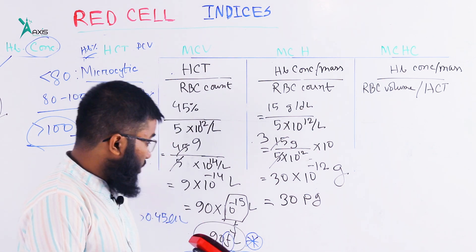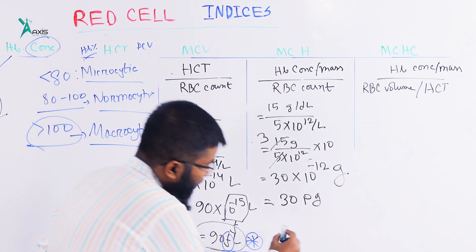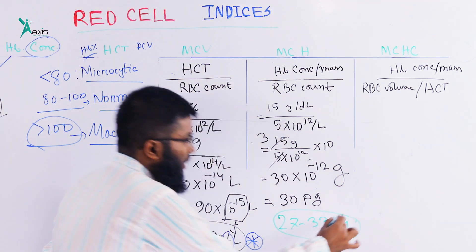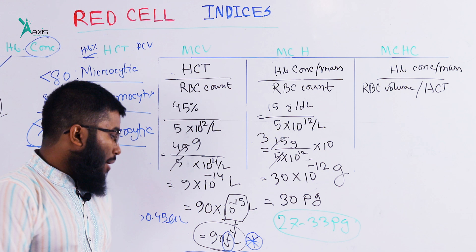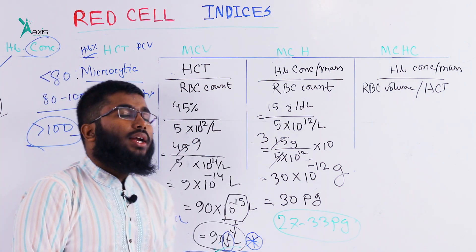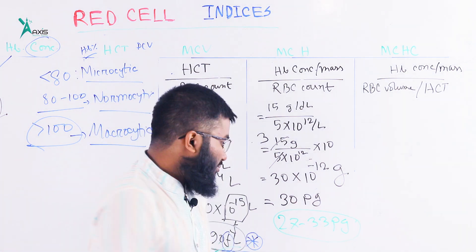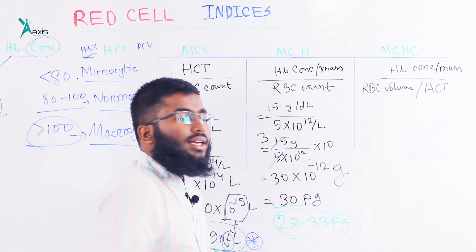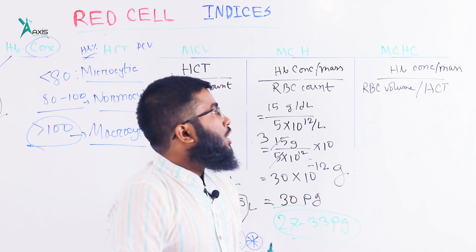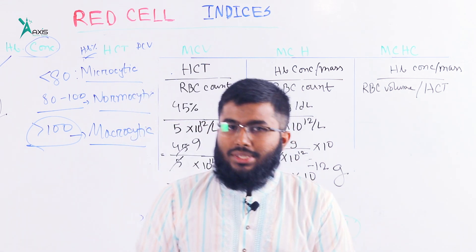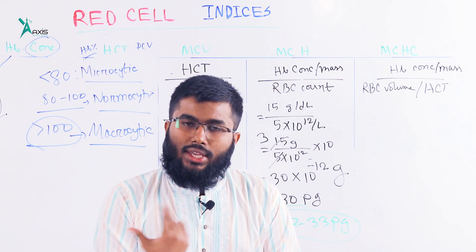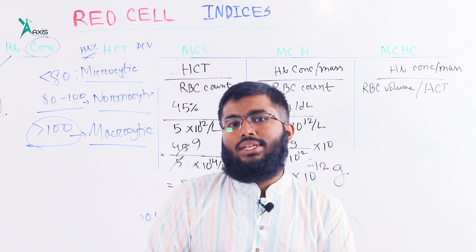The result is 33 picograms. The MCHC (Mean Corpuscular Hemoglobin Concentration) — when MCHC is low, it indicates a condition such as iron deficiency.